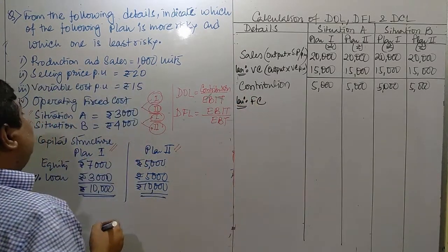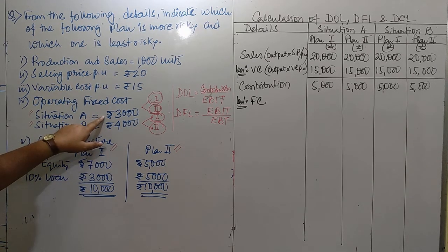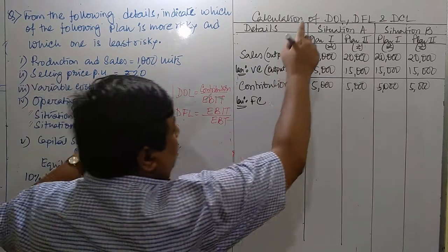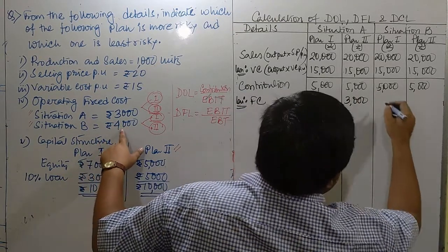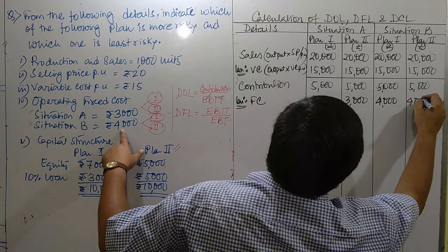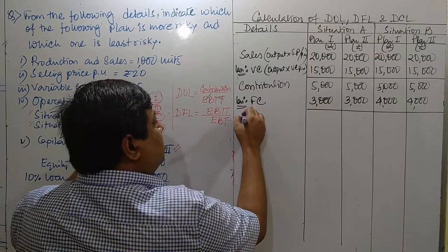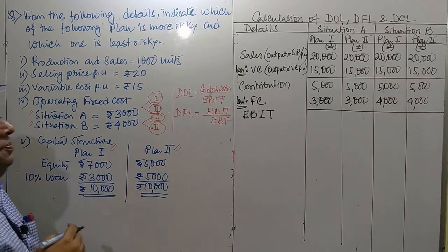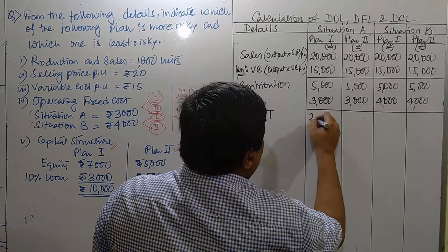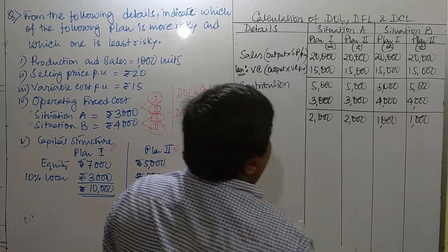From contribution, we deduct fixed cost. You have to be cautious here — operating fixed cost is mentioned: in situation A it is Rs. 3,000, whereas for situation B it is Rs. 4,000. For situation A in either plan, consider it Rs. 3,000; for situation B, Rs. 4,000. Once we subtract fixed cost from contribution, we get EBIT — earnings before interest and tax. EBIT for situation A columns is Rs. 2,000 each, and for situation B columns it is Rs. 1,000 each.